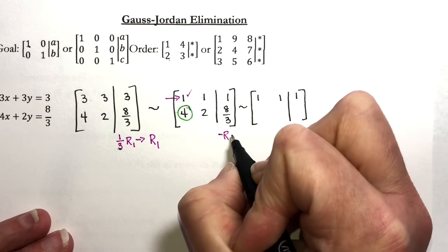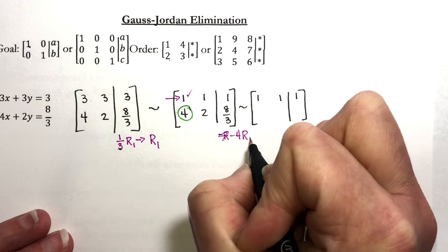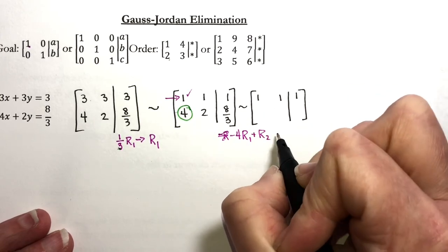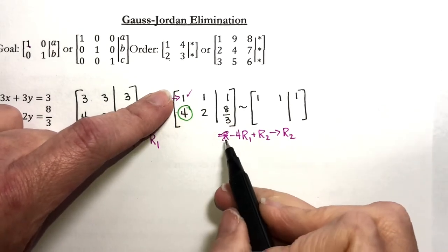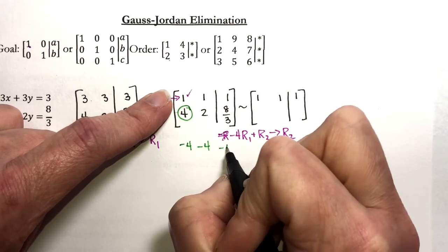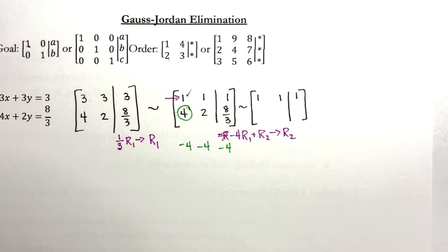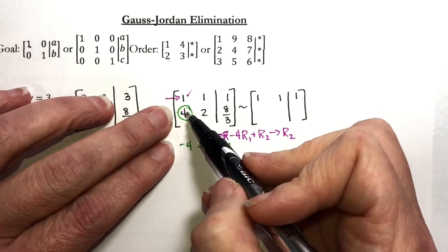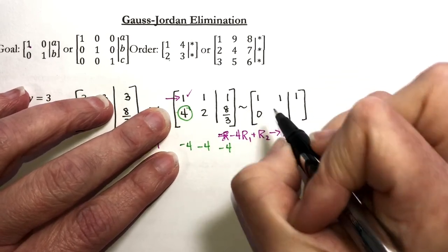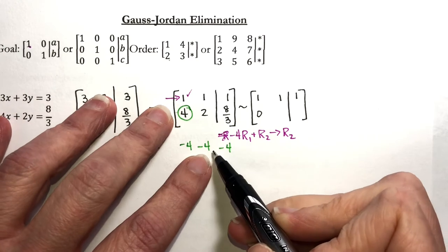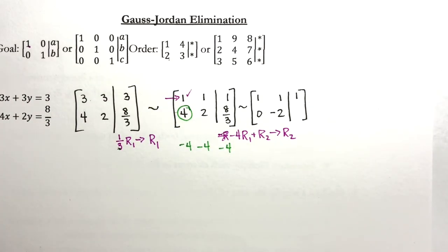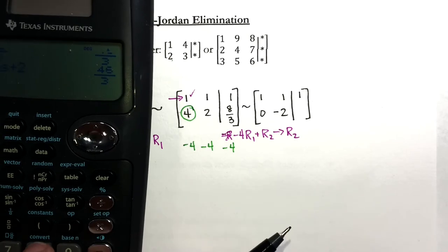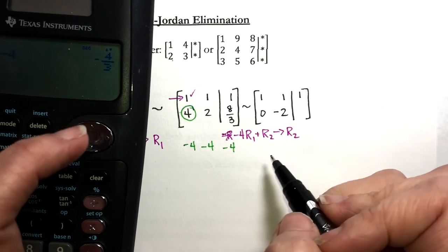So I'm going to do negative four times row one plus row two, and then I'm going to write that answer where row two is. If I multiply row one by a negative four, it's negative four all the way across. And now I add. Four plus negative four is zero. Two plus negative four is negative two.